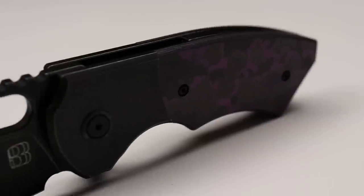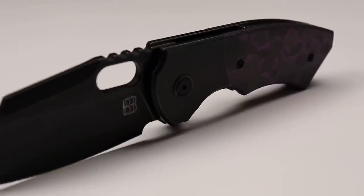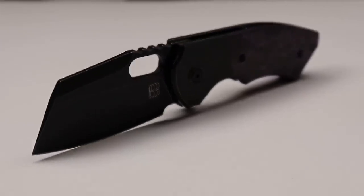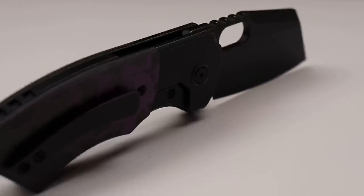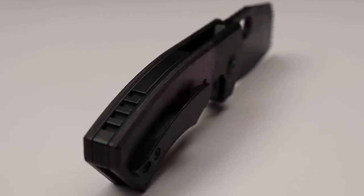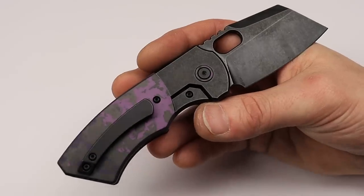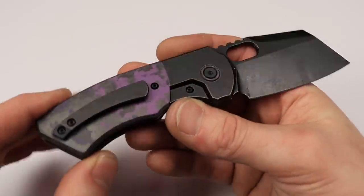M390 blade, titanium bolster lock. And this one's got the purple fat carbon fiber. But there are, like, I don't even know how many options. There's a lot of different options. A bunch of different colors in fat carbon fiber from red, green, blue, all different colors. I'll link everything down in the description.